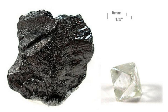Deposits of graphite in Borrowdale, Cumberland, England were at first of sufficient size and purity that, until the 19th century, pencils were made simply by sawing blocks of natural graphite into strips before encasing the strips in wood. Today, smaller deposits of graphite are obtained by crushing the parent rock and floating the lighter graphite out on water.